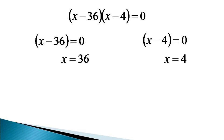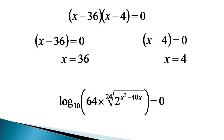When both these values are verified against the original equation, it is found that x equals 36 as well as x equals 4 both satisfy the given equation. Hence, these two are the solutions of the given equation. Thanks for watching.